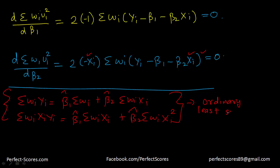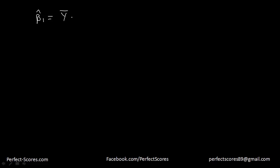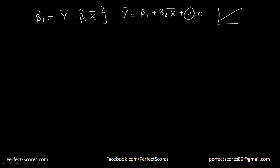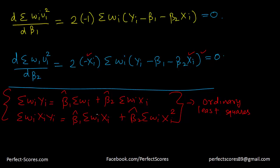Solving these two equations — similar to solving the ordinary least squares normal equations — we get the estimators. The value of β1-hat equals the weighted average of y minus β2-hat times the weighted average of x. This is analogous to OLS. Note that at the average values, the error term equals zero since we are dealing with the line itself.